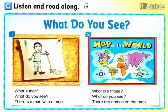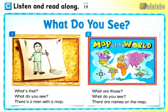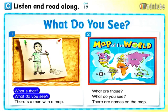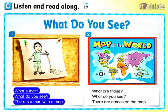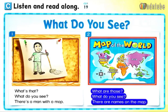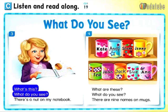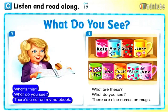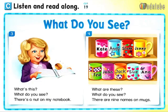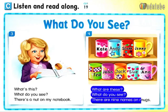Page 11. C. Listen and read along. What do you see? One: What's that? There's a man with a mop. Two: What are those? There are names on the map. Three: What's this? There's a nut on my notebook. Four: What are these? There are nine names on mugs.